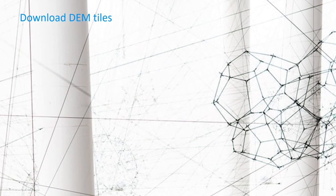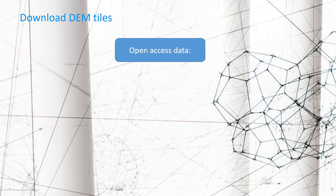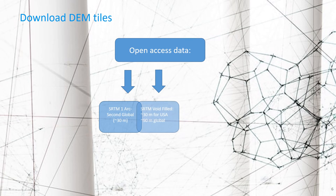The first step is to download the DEM. Normally it comes in tiles and if we don't have access to local data because of the cost or the unavailability, we can use global open access data. Most of the time we will use the SRTM one arc second global product, which is around 30 meters on the equator. There are also some other products.